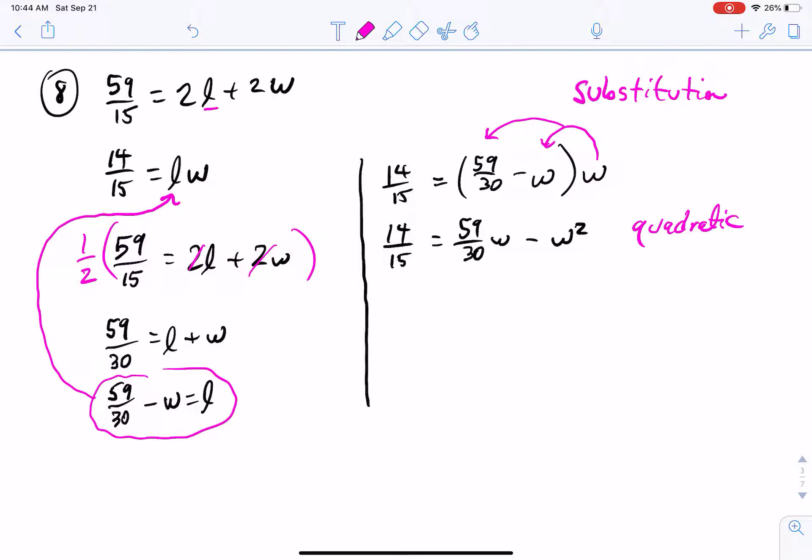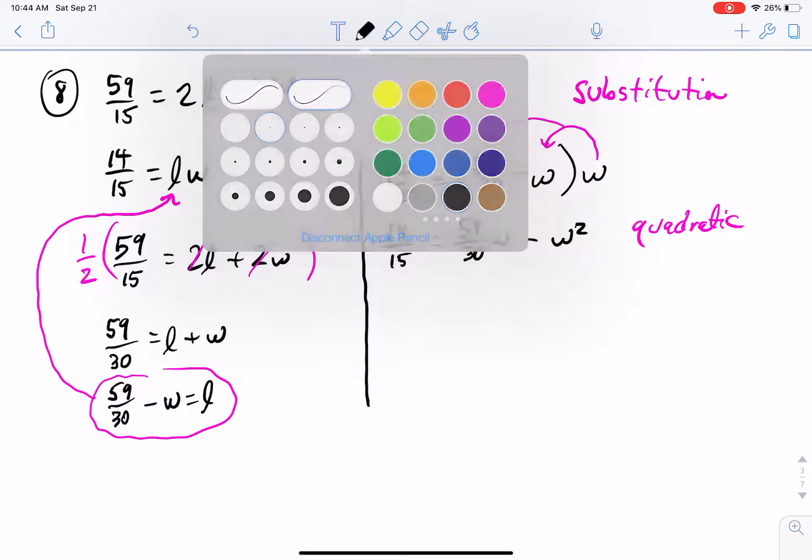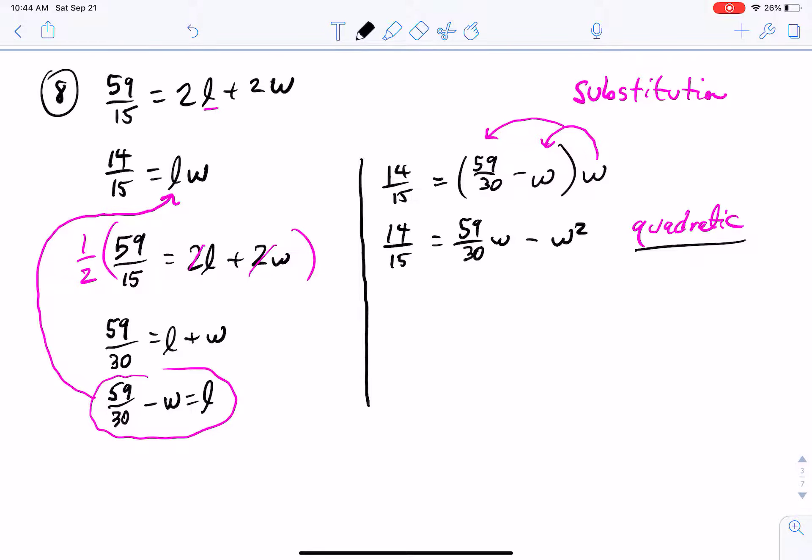And now you can see that we've got ourselves a quadratic equation. So it was both a system of equations, which turned into a quadratic equation, and now how do I solve quadratic equations? So for quadratic equations, we've got, we could graph the thing, just like for substitution, that was one of the methods that we could use. We could use the quadratic formula, which, if you have forgotten, is X is equal to negative B plus or minus the square root of B squared minus 4AC all over 2A.